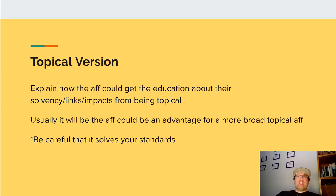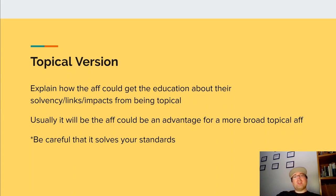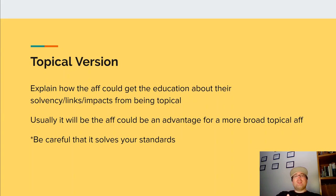You want to have a topical version. Explain that if there are any education arguments they say are key from their solvencies, their links, their impacts, that those would be accessible with a topical version of the affirmative. Usually in regular T debates, you're going to look at a plan text that is very hyper-specific and realize that hyper-specific plan text is actually just a fraction of a much larger aff. Usually teams could read the advantage they are reading right now with a more broad affirmative that has to defend a few more things, therefore allowing for an equitable division of aff and neg ground.